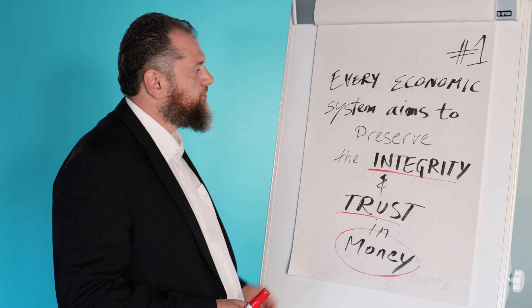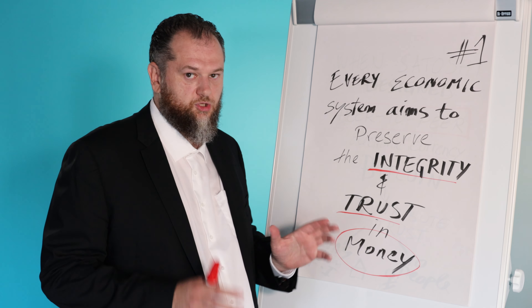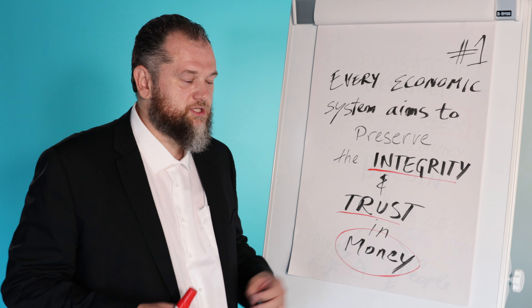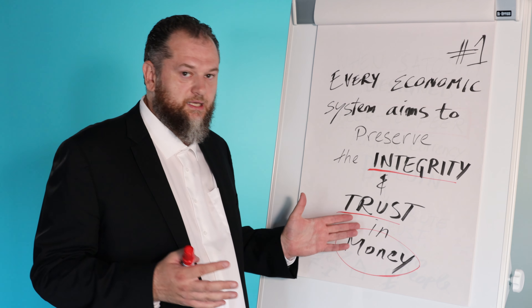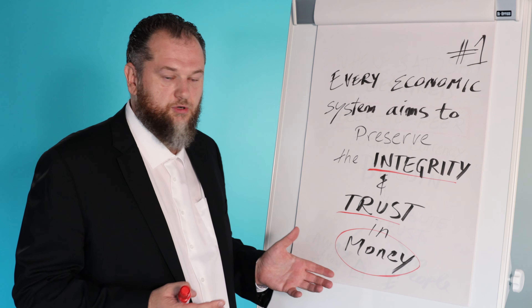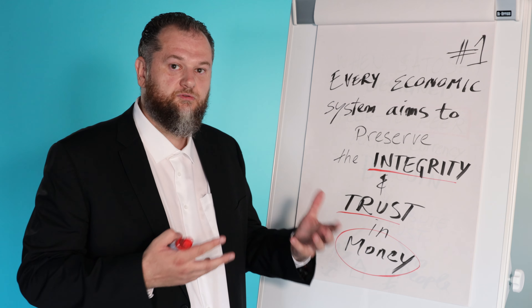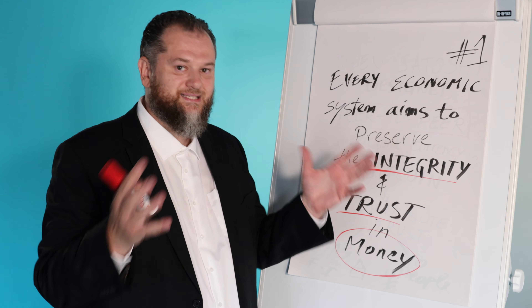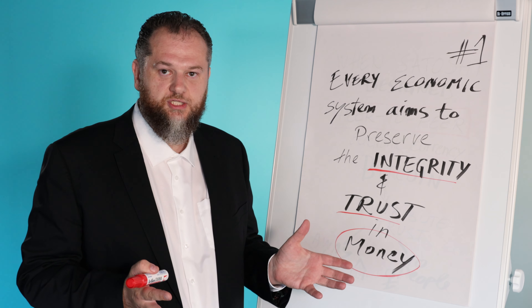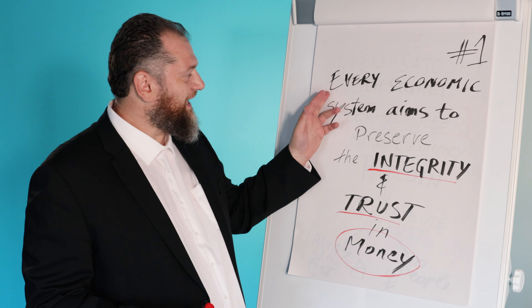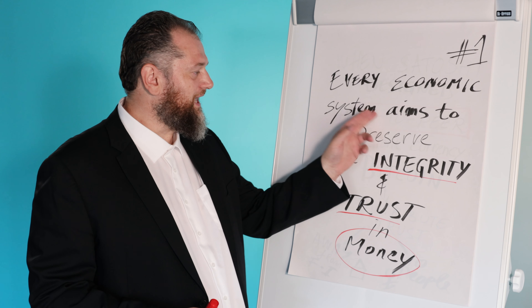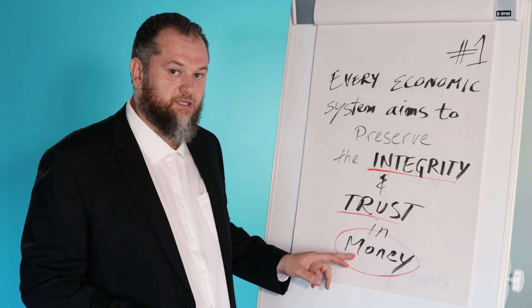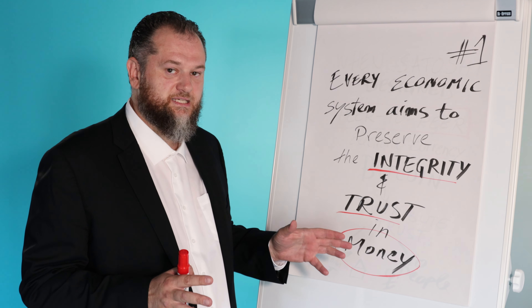If you have a look at every economic system, you will see — just like those of you who study Sharia or Islamic finance — that one of the core aims of Sharia is to preserve wealth, whether that is individual wealth, how we contract, how we engage with others, or as an economic or financial system. Every system will aim to preserve integrity and trust in money as a key building block of that system.